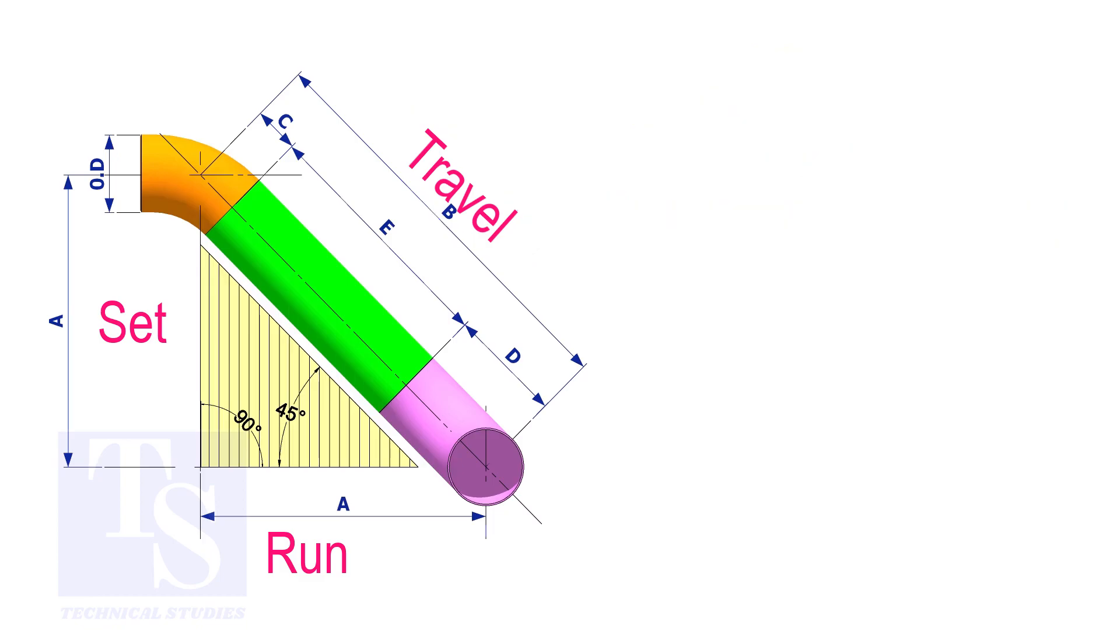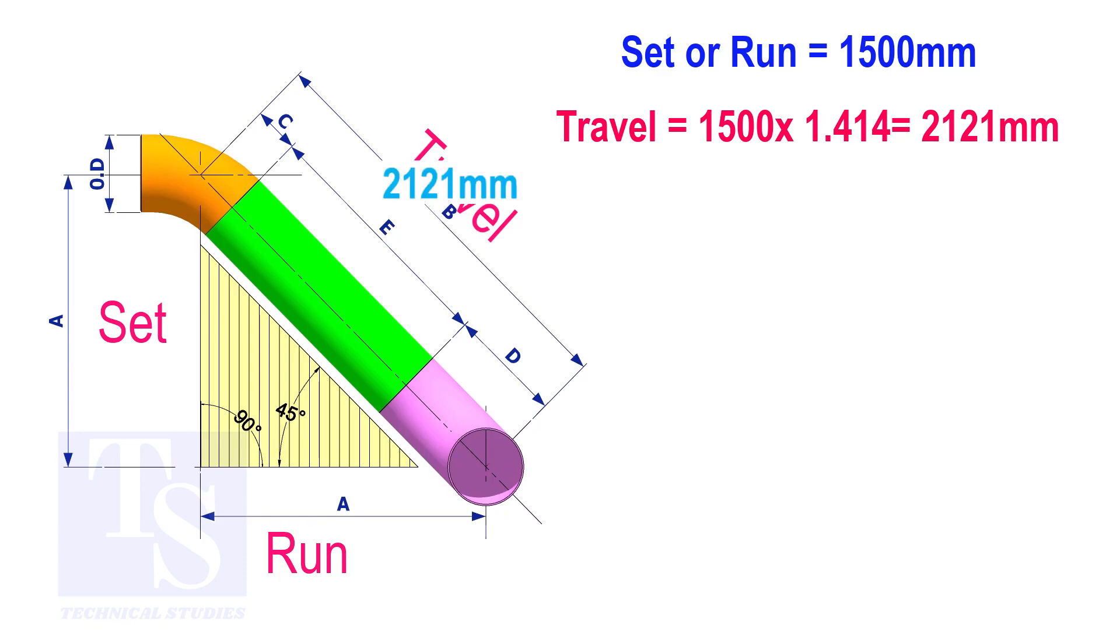Try another example. Suppose the value of the set or the run is 1500 millimeters. The value of the travel will be 1500 multiplied by 1.414 equals 2121 millimeters.